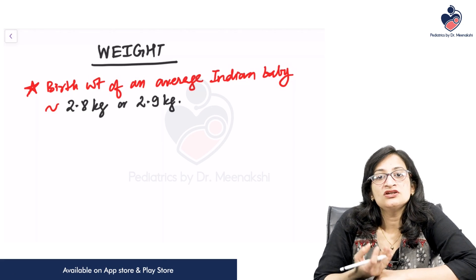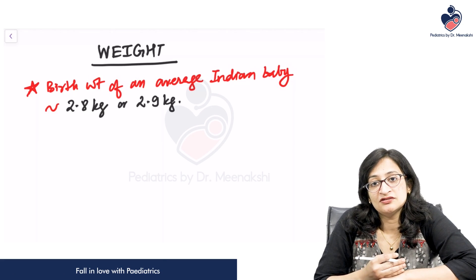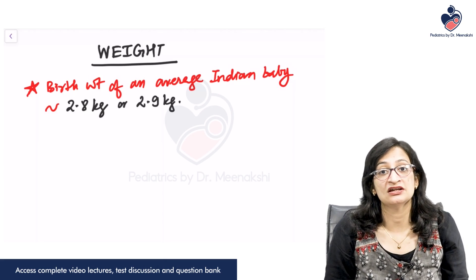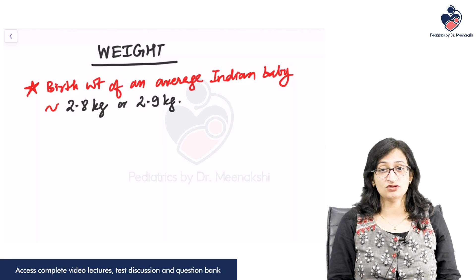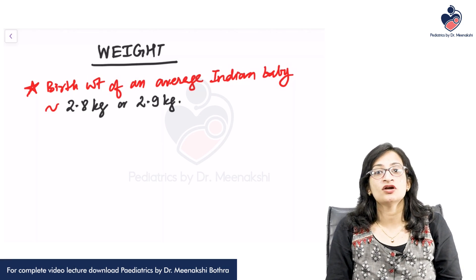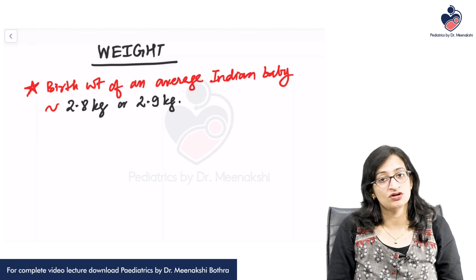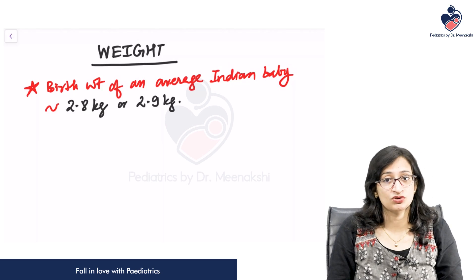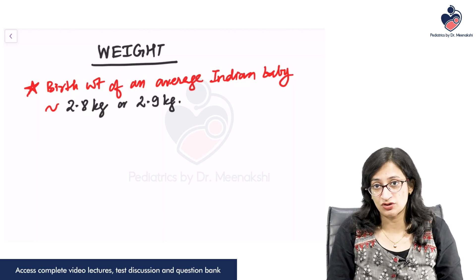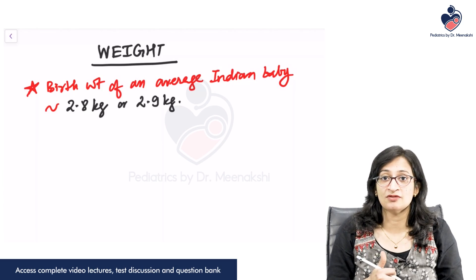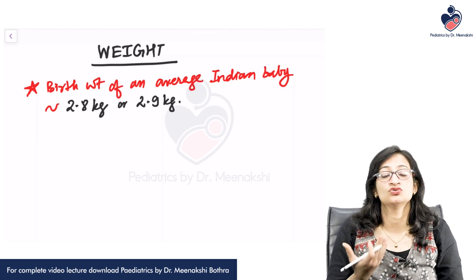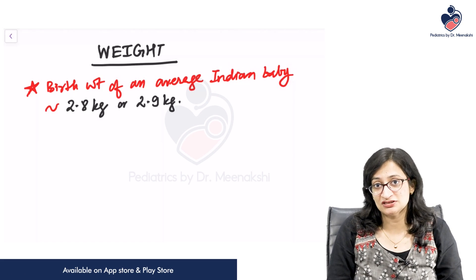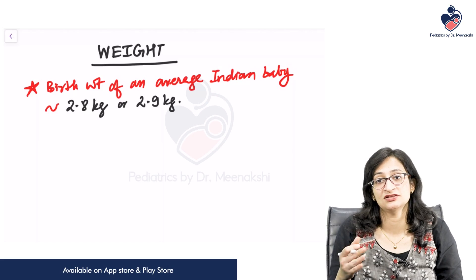We need to know how the weight of a child increases with age. For example, if you have a 4-year-old child with a weight of 10 kg and the mother wants to know whether the weight of the child is normal or not — you may not be supplied with growth charts during your exams. So we need to know some simple rules of thumb to know the expected weight at different ages, and how the weight of a child increases as he grows up.